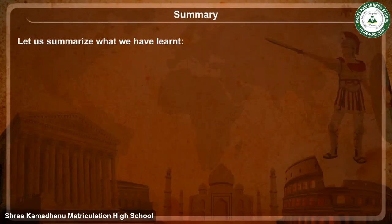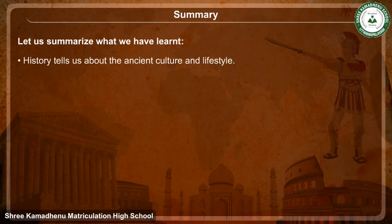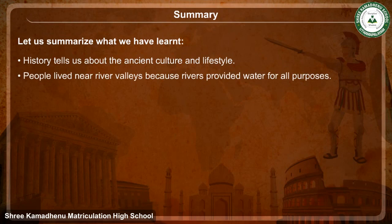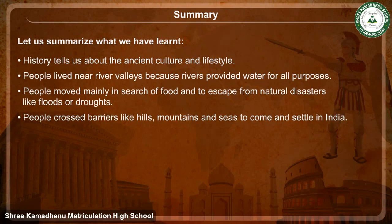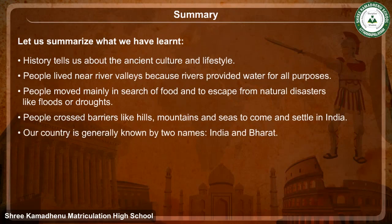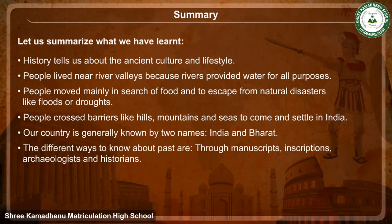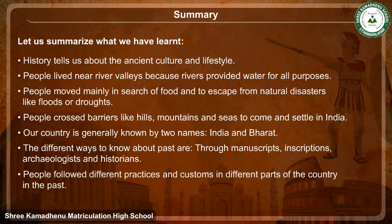Summary: History tells us about the ancient culture and lifestyle. People lived near river valleys because rivers provided water for all purposes. People moved mainly in search of food and to escape from natural disasters like floods or droughts. People crossed barriers like hills, mountains and seas to come and settle in India. Our country is generally known by two names — India and Bharat. The different ways to know about the past are through manuscripts, inscriptions, archaeologists and historians. People followed different practices and customs in different parts of the country in the past.